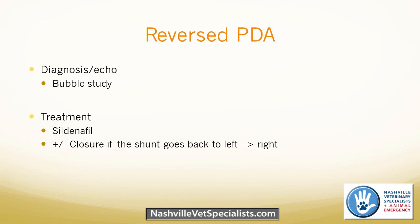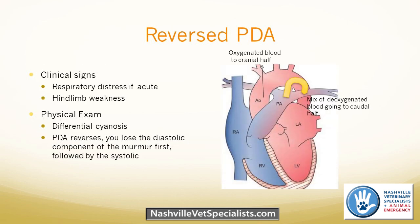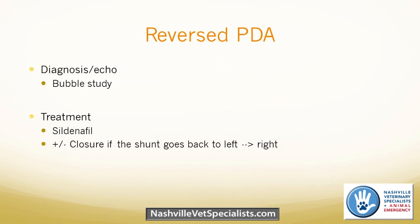With a right-to-left shunt, you see bubbles enter the right heart and then go elsewhere. For a reverse PDA, you see bubbles fill the right heart and then almost immediately appear in the abdominal aorta — because the ductus shunts blood from the pulmonary artery directly into the descending aorta. Treatment involves trying to treat the pulmonary hypertension with sildenafil. If pulmonary pressures don't decrease, there's nothing else to do — you cannot close a right-to-left PDA. If pulmonary pressures decrease enough and the shunt reverses back to left-to-right, then you can close it.